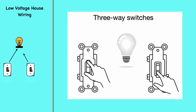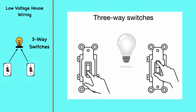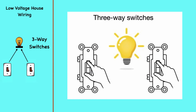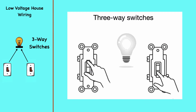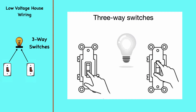Three-way switches allow for controlling a light fixture from two separate locations. These are usually used at the top and bottom of a flight of stairs, or at two different entrances to a room. What follows are several wiring diagrams that can be used to map three-way lighting circuits, depending on the location of the power source in relation to the switches and lights.